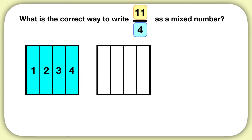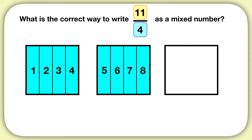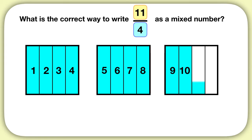break it into fourths, and shade 5, 6, 7, 8 fourths. I need to have 11 fourths, so I'll draw another whole, break it into fourths, and shade 9, 10 — there's my 11th fourth.